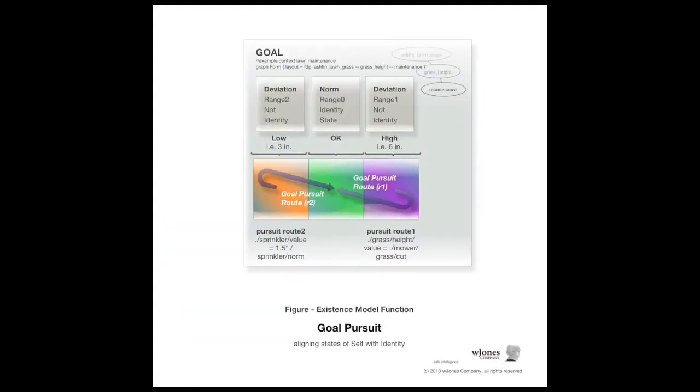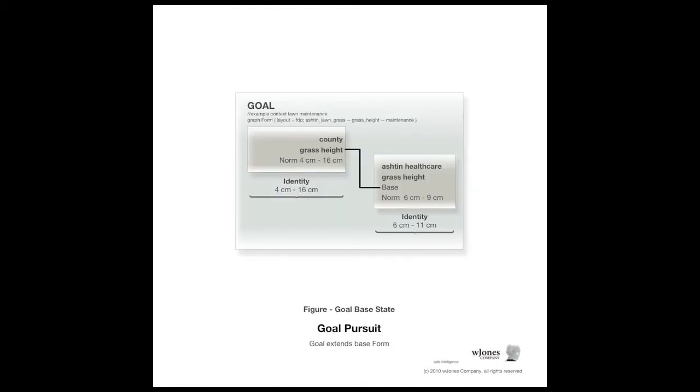One of the foundational information components that you'll see in the fabric is a goal and we'll talk a lot about goals, the existence model function, and how an intelligent entity will align its states, called self, with identity, the recorded definition of what it believes itself to be.